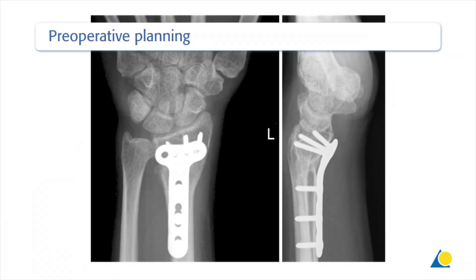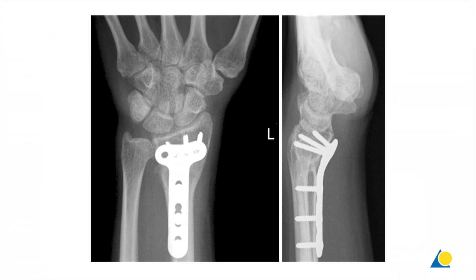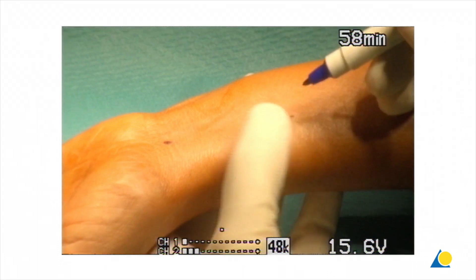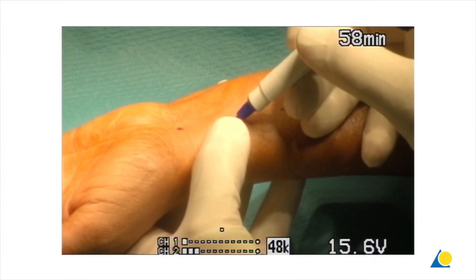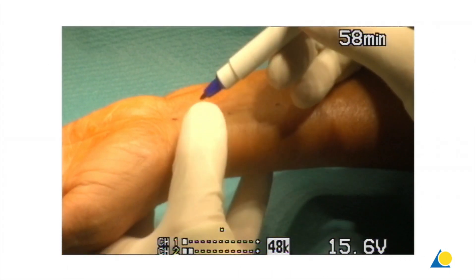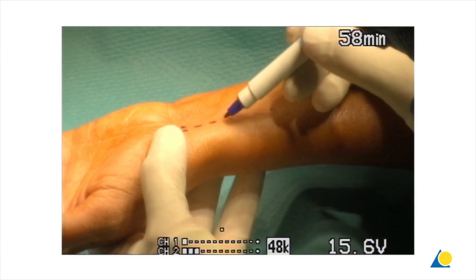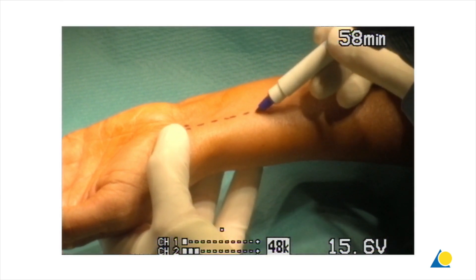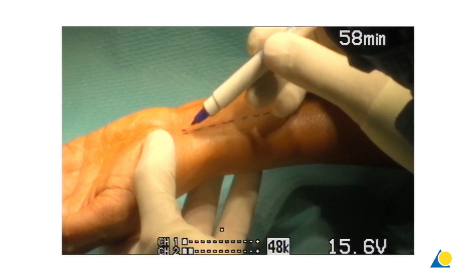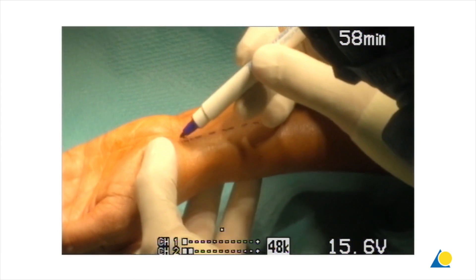Precise preoperative planning is necessary. Since the plate determines the extent of the correction, the position of the plate has to be calculated with care. Using the x-rays of the malunited bone, the contours of the distal radius in the AP and the lateral projection are outlined on tracing paper. The height of the ulnar head is marked on the paper with a dotted line.